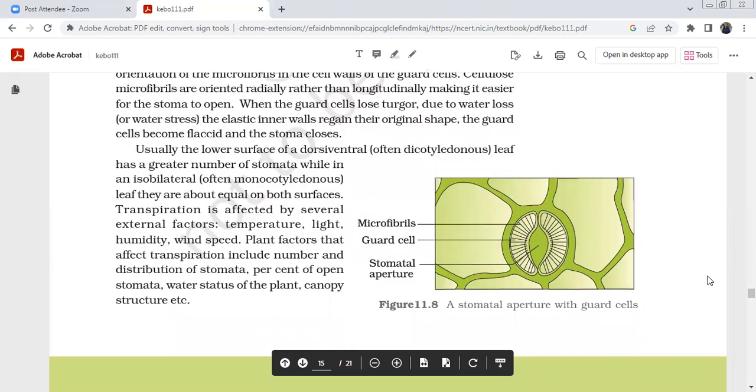Usually, the lower surface of a dorsiventral leaf has a greater number of stomata. The stomata is only on one side of the leaves. In isobilateral leaf, stomata are distributed on both surfaces equally.